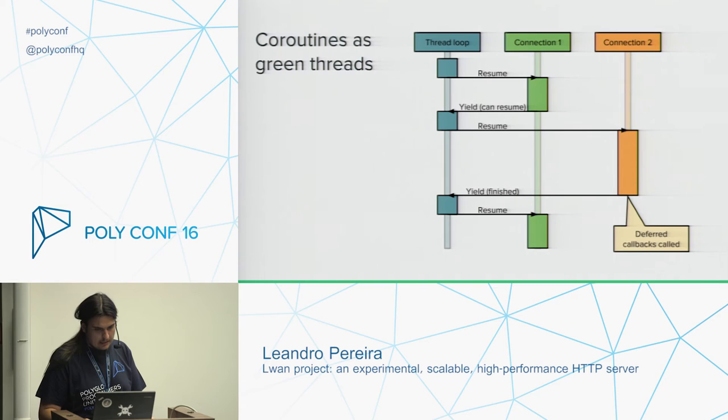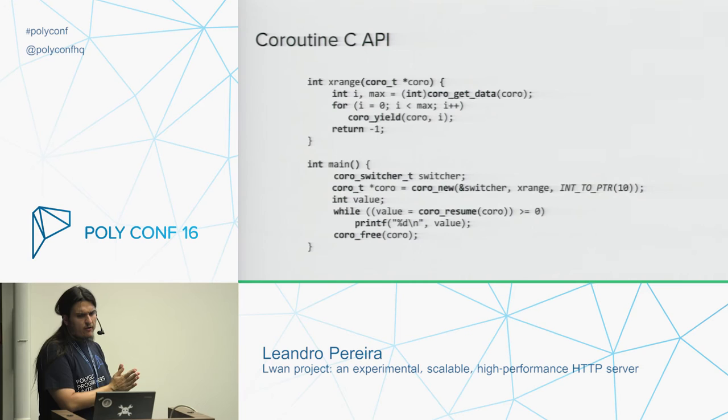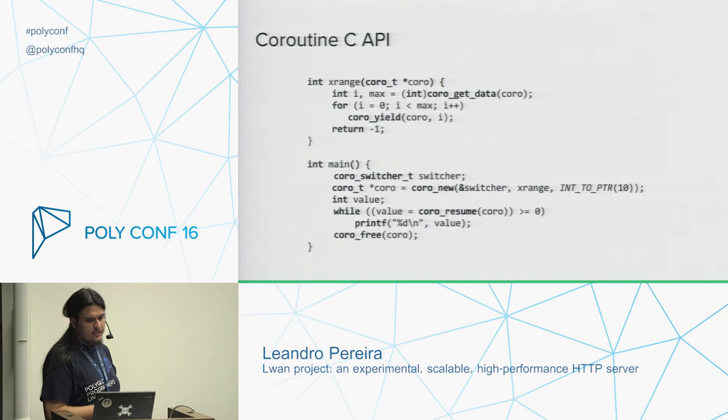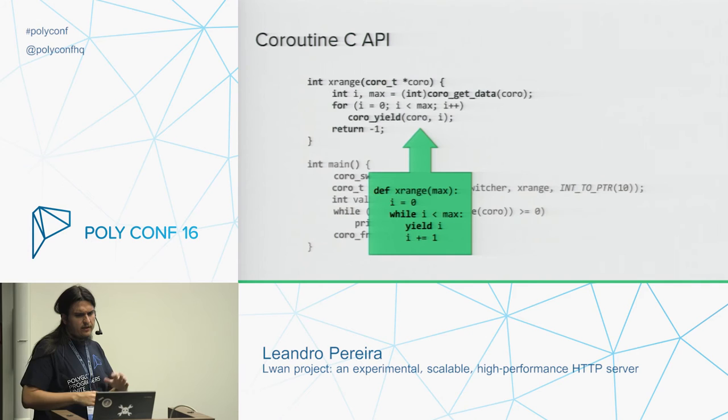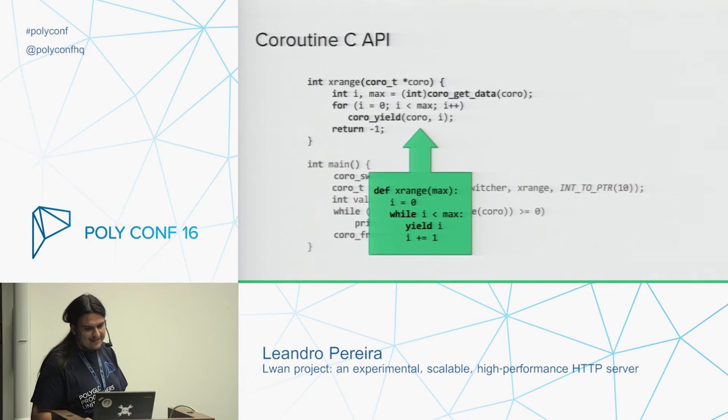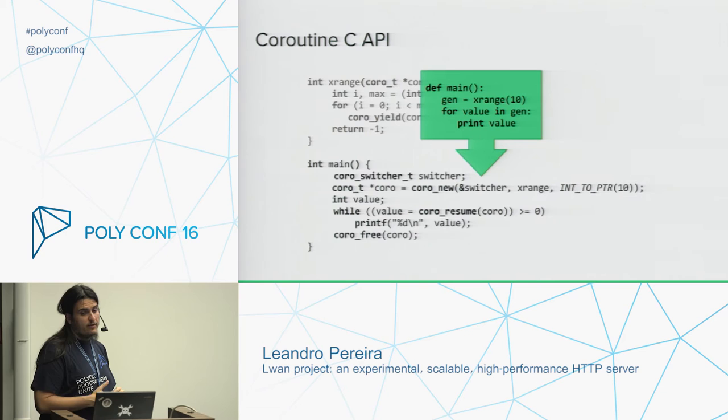Here's a sample showing how the coroutine API is presented to the user. In this completely over-engineered example, a naive equivalent to Python's xrange generator is shown. I can note the similarities — if anything, the number of lines is the same. C isn't that hard after all, right? The client code is slightly more complex, but not much more — it's still pretty readable.